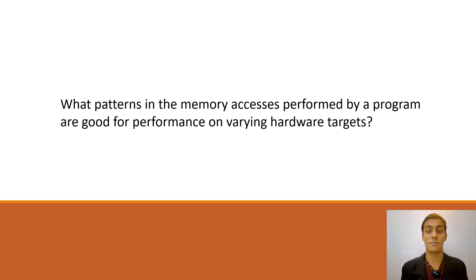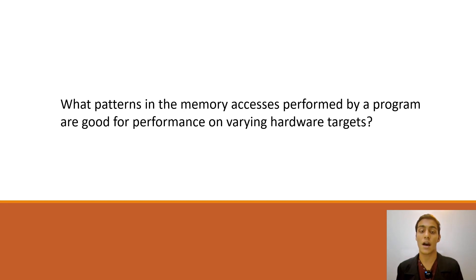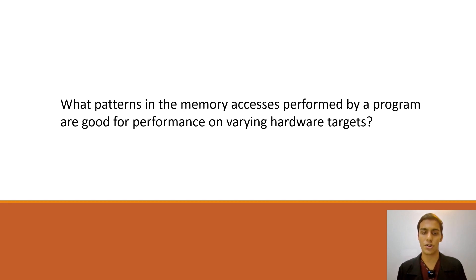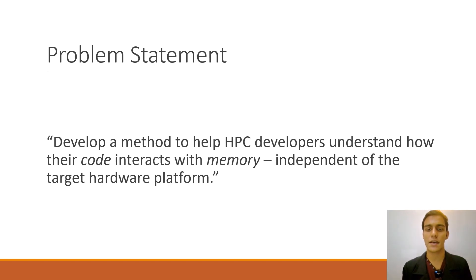This all makes the job of optimizing performance-critical HPC code quite challenging. Not only does an HPC developer need to think about all of the heterogeneous architectures that code could be executing on, they also need to have a really good idea of the bottlenecks of their code on each of these hardware targets. One source of these bottlenecks is the complex memory structures that the hardware designers have created. This begs the question: what kinds of patterns intrinsic to the code in the memory accesses done by a program are good for performance? In short, we want a way of understanding how code interacts with memory, independent of the target architecture, in a way that can guide HPC developers in optimizing their code.